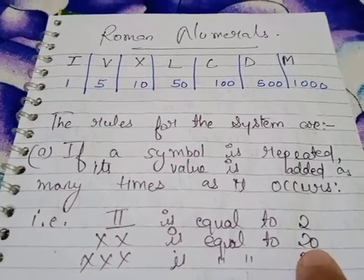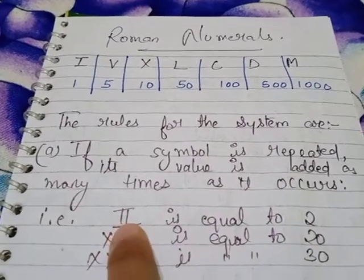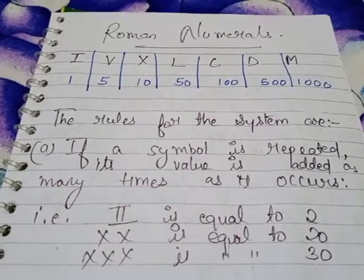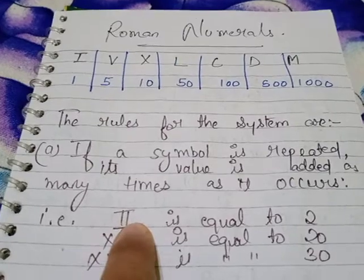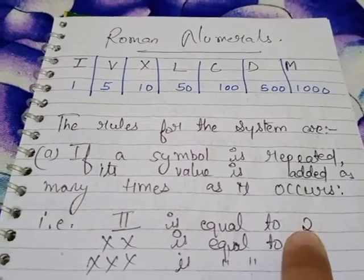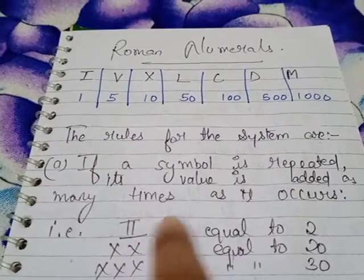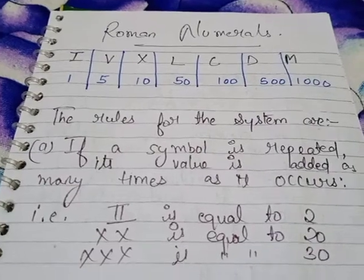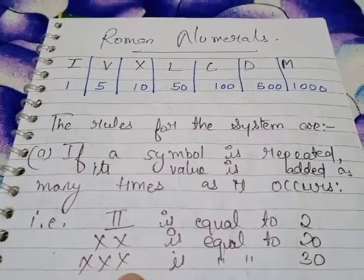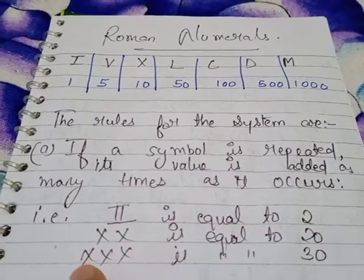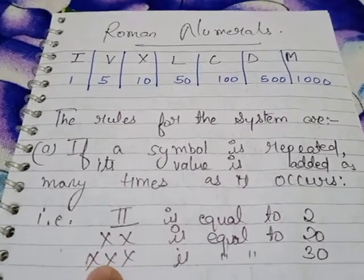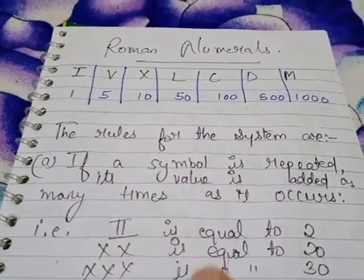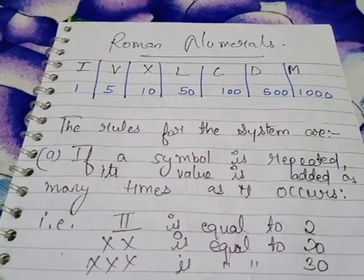Similarly, one straight line denotes 1. Two lines together make 2. One more line makes it 3. So the first rule is clear: whatever symbol is repeated, its value is added to itself. The value of X is 10; however many times we write X, 10 will be added that many times.